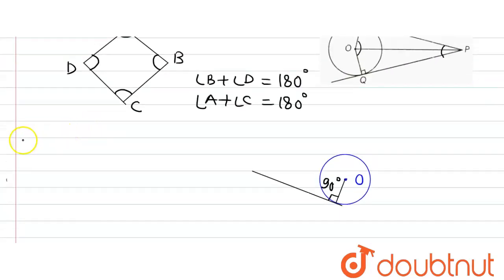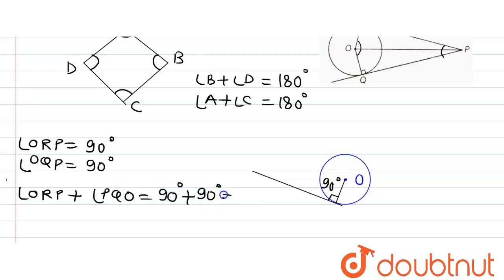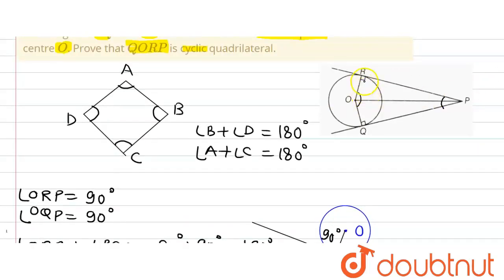So we have angle ORP equals 90°. Similarly, we can write angle OQP equals 90°. Therefore, the sum of angle ORP plus angle OQP equals 90° plus 90°, which equals 180°. We denote this as equation one.